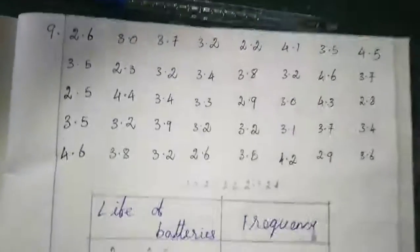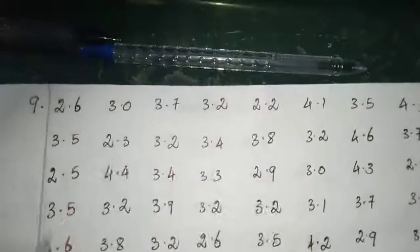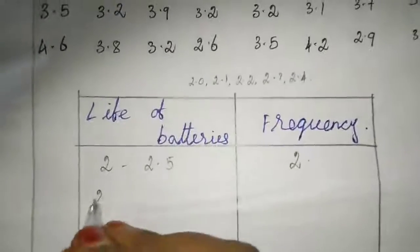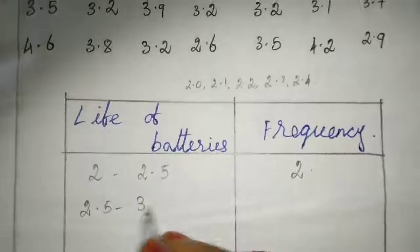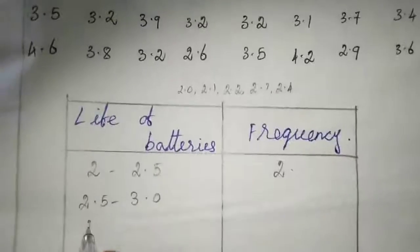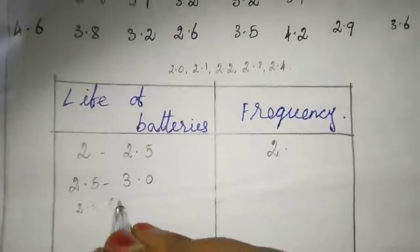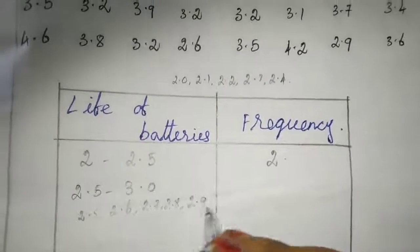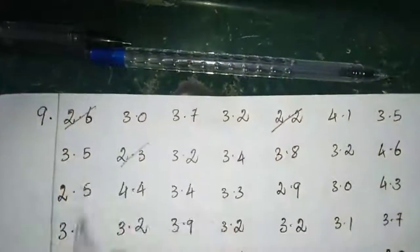First they told 2 to 2.5, so 2.0, 2.1, 2.2, 2.3, 2.4 like this it will come. Now we will refer the data. 2.2 to 2.5, how many is coming? Counting through the data, we have 2 only, so here it will come 2. Next one is 2.5 to 3.0. Here it will come 2.5, 2.6, 2.7, 2.8, 2.9 up to 3. Counting, we have 6.